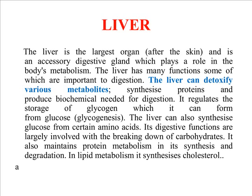Another important part of the digestive system is the liver. The liver is the largest organ of the body and is an accessory digestive gland which plays a role in the body's metabolism. Metabolism is a process that converts inactive drugs to active forms, as well as the conversion of complex molecules into simple molecules. The liver has many functions important to digestion: it can detoxify various metabolites, synthesize proteins, and produce biochemicals needed for digestion. It also regulates and stores glycogen, which is essential for the digestive system and energy production. This process involving glucose is called glycolysis. The liver can also synthesize glucose from certain amino acids.